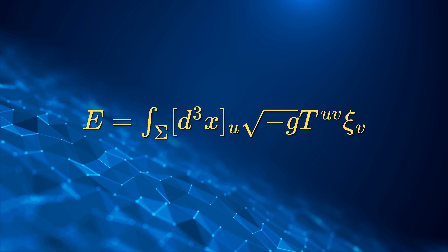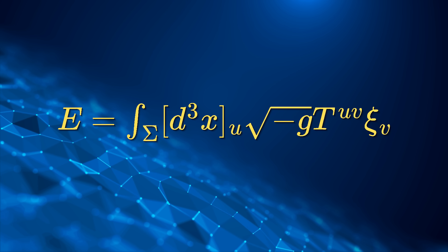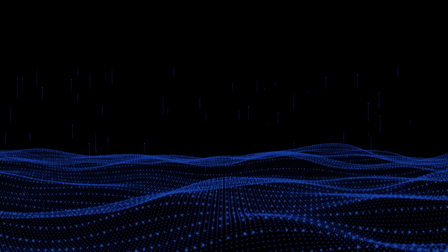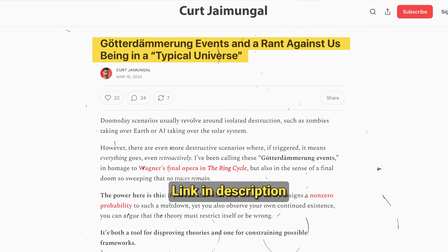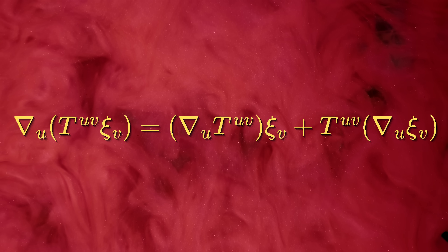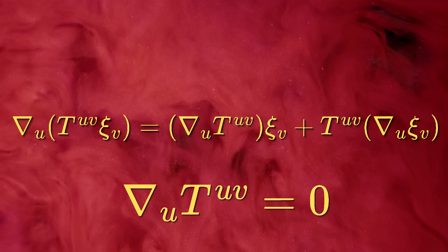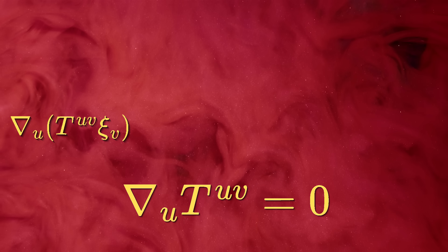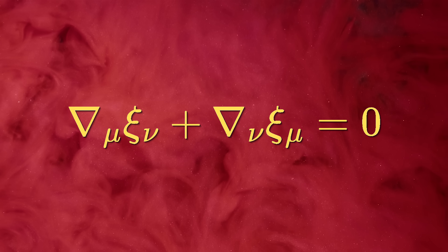If there's a time-like Killing field — named after Wilhelm, not murderous — meaning spacetime looks the same along the flow of this vector field, then you can define a genuinely conserved, coordinate-independent energy. This expression is conserved because the first term is zero and the second vanishes since the capital T is symmetric, and the Killing equation simplifies accordingly. The problem is that most spacetimes, especially realistic cosmological ones, don't have exact Killing vectors, so this definition, while clean, is limited.